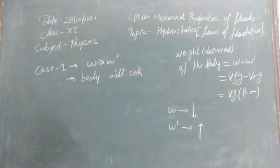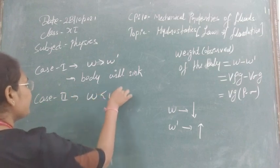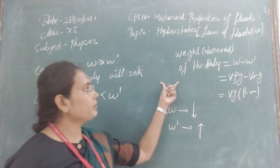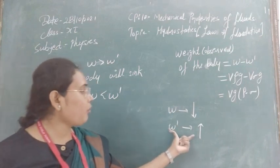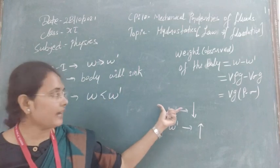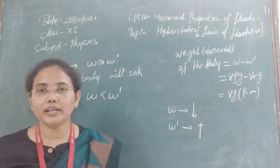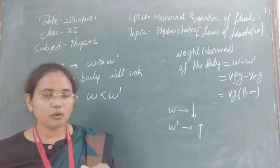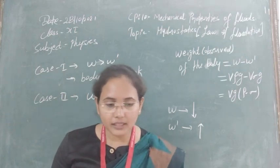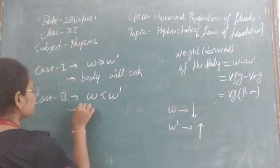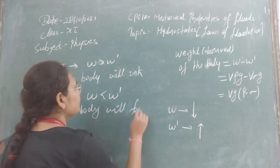Case 2: When W is less than W'. In this case the observed weight becomes negative, meaning the buoyant force acting on the body is greater than the weight of the body acting downward. A net upward force acts on the body, causing the immersed body to rise and float over the surface. So the body will float in this condition.